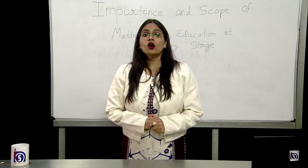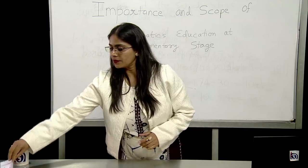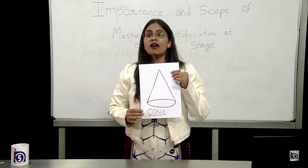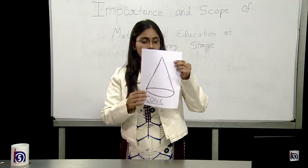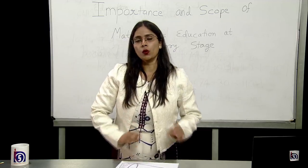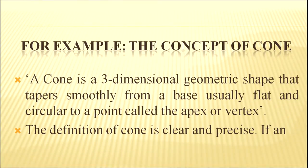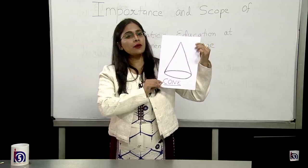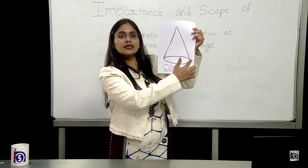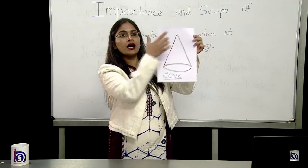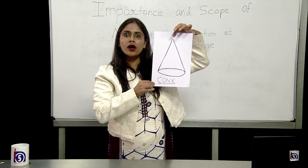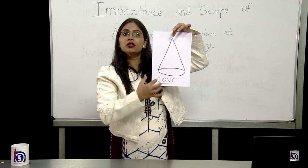Example: the concept of cone. Here I have a cone diagram. What is cone? A cone is a three-dimensional geometric shape that tapers smoothly from the base, usually flat and circular, to a point called the apex or vertex. Here I have a shape of cone—the base is circular and the top, the apex, the point is vertex. This is a three-dimensional geometric shape.